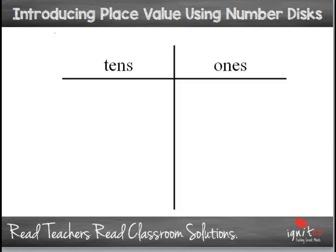Base-10 blocks — which are my least favorite — along with beans and straws. Students should be able to articulate how place value is used within our system. In first grade, that looks like: if you have the number 38, how many ones are there? There are eight ones. How many groups of 10 are there? There are 10 ones in each group. That's how you know first graders have mastered the concept and are ready to move on to number disks.